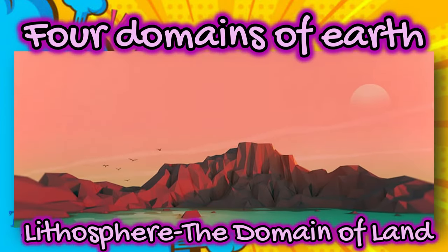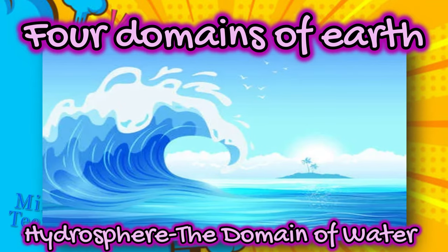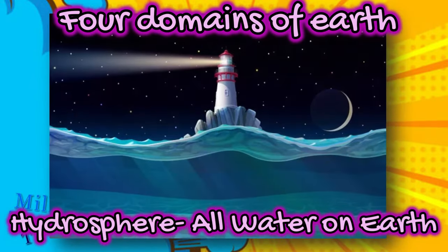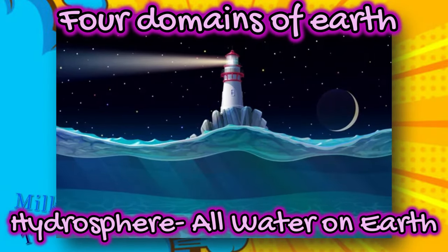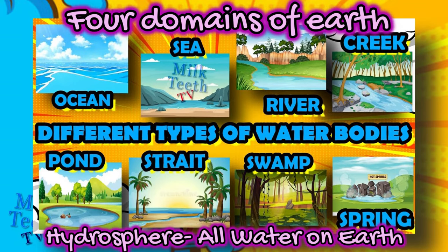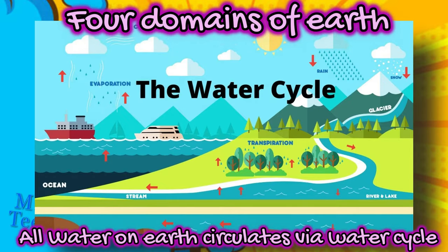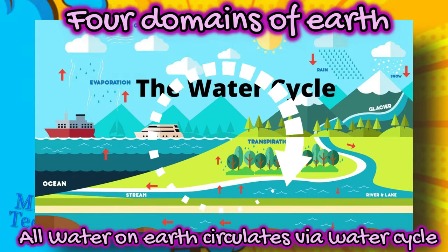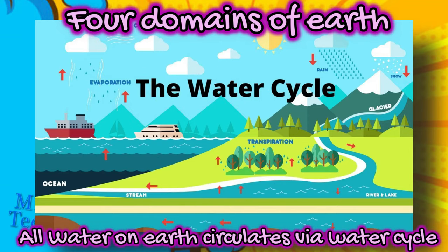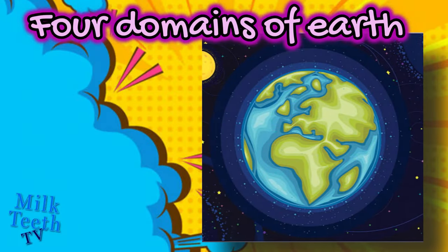Moving on to Earth's next domain: the hydrosphere, or the domain of water. All water on Earth is a part of the hydrosphere. Various water bodies like oceans, seas, rivers, ponds, straits, swamps, and springs make up the hydrosphere. All water on Earth undergoes a continuous cycle known as the water cycle, which is also an important part of the hydrosphere.